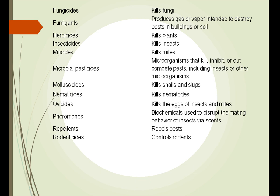Miticides kill mites. Ovasides kill the eggs of insects. When we bring home plants from the grocery store or florist, sometimes you see little bugs flying around. You can't just kill the bugs — you have to kill the eggs, which are in the soil too. We also use pheromones to attract insects so that they can be more easily dealt with.